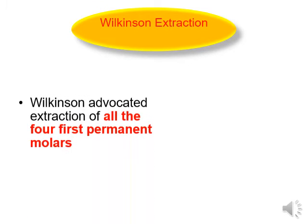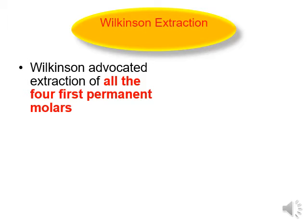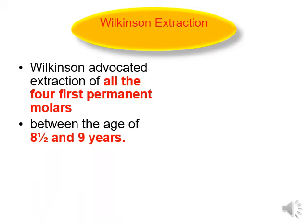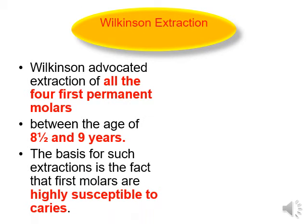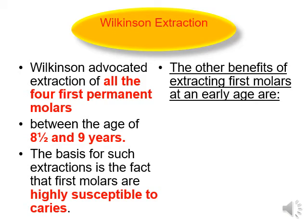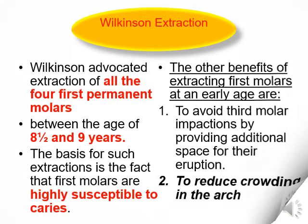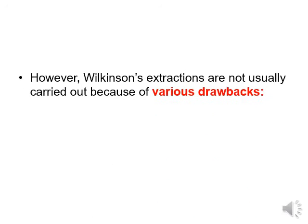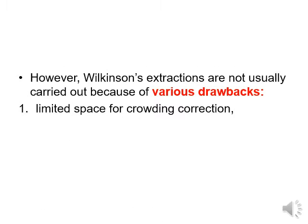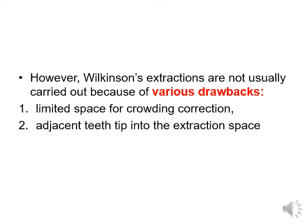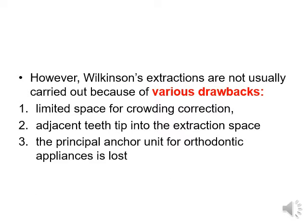Wilkinson extraction: Wilkinson advocated extraction of all four first permanent molars between the age of eight and a half and nine years. The basis of such extractions is the fact that the first molars are highly susceptible to caries. Other benefits of extracting first molars at an early age are to avoid third molar impaction by providing additional space for their eruption and to reduce crowding in the arches. However, they have various drawbacks: they provide limited space for crowding relief, the adjacent teeth step into the extraction space, and the periodontal principal anchor unit for orthodontic appliances is lost.